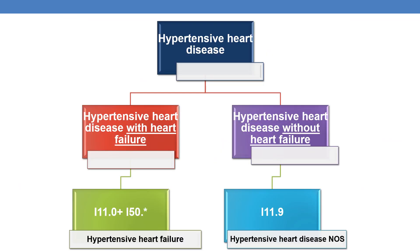Let us first discuss about hypertensive heart disease. Hypertensive heart disease can be broadly categorized into two categories: with heart failure and without heart failure. If the patient has hypertensive heart with heart failure, as discussed earlier, the code for hypertension is I-11.0. Additionally, you need to code the I-50 series.